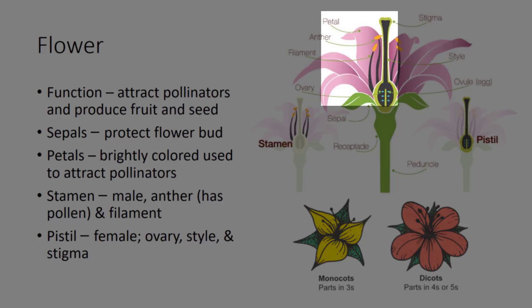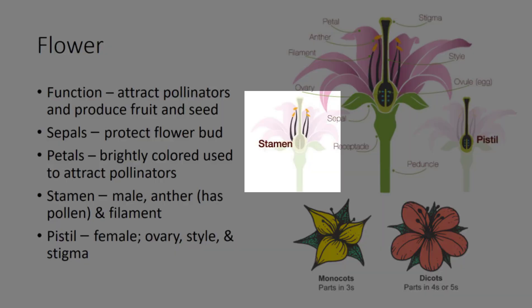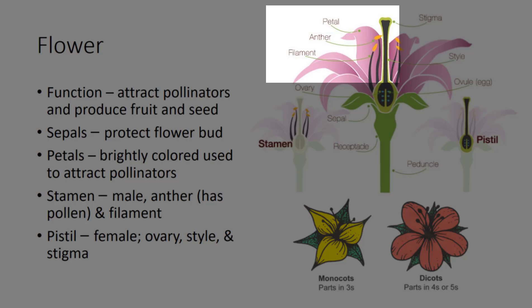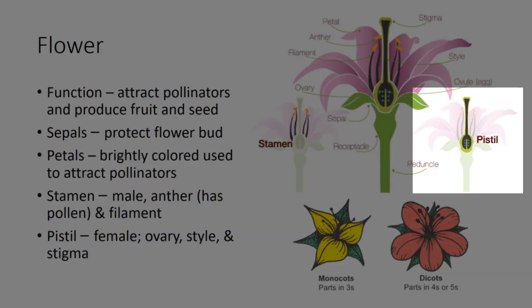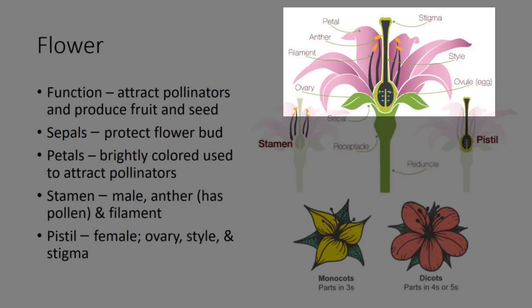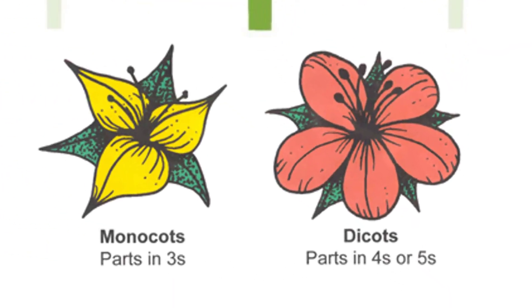The petals are brightly colored portions of the flower that are used to attract pollinators. The stamens are the male reproductive part of the flower. The stamen consists of a filament that supports the anther, which produces the male sex cells. The pistils are the female reproductive part of the flower. The pistil consists of the stigma, which is the sticky surface for collecting pollen; the style, which is the tube that connects the stigma and ovary; and the ovary, which contains ovules or eggs. Monocots typically have flower parts in multiples of 3, while dicots have flower parts in multiples of 4s and 5s.